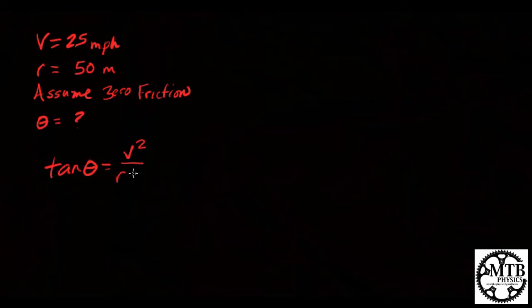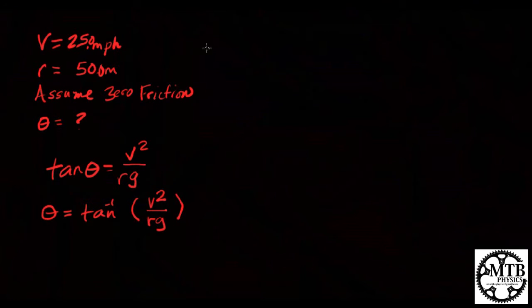So to find our angle, take the inverse of the tangent, multiply by our velocity squared divided by rg, and we'll substitute in what we know. First thing we need to do is convert miles per hour to meters per second.